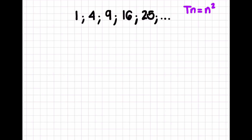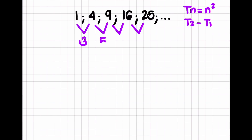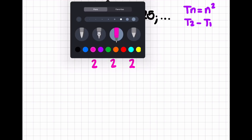However, we obviously need to know a process for how to determine that nth term for when it's not just 1, 4, 9, 16. So we're going to start by determining our difference — whether it's a constant first difference or a constant second difference. When determining the difference, it's term 2 minus term 1, term 3 minus term 2, etc. So: 4 minus 1 is 3, 9 minus 4 is 5, 16 minus 9 is 7, and 25 minus 16 is 9. We don't have a constant first difference, so now we look at the second difference: 5 minus 3 is 2, 7 minus 5 is 2, and 9 minus 7 is also 2. So now we have a constant second difference.